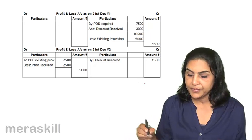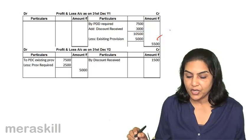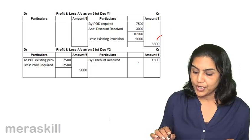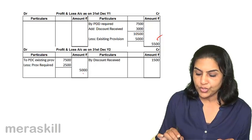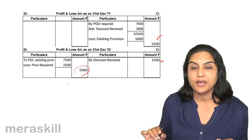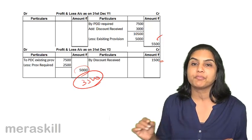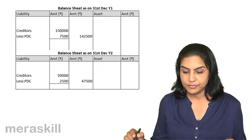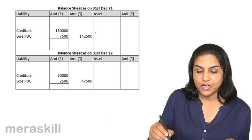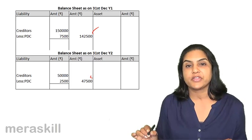Now the final accounts for the same problem. In Year 1, 5500 is credited to the profit and loss account. In Year 2, the provision required is 7500; discount received of 1500 is shown on the credit side and 5000 has been written back — the net effect is 3500 on the debit side of the profit and loss account. In the balance sheet, creditors less provision for discount on creditors: in Year 1 it reduces accordingly, and in Year 2 it is 50,000 less 2500, giving 47,500.